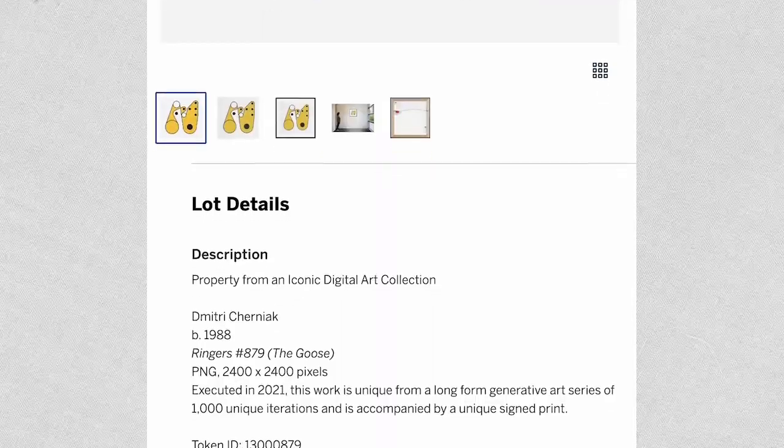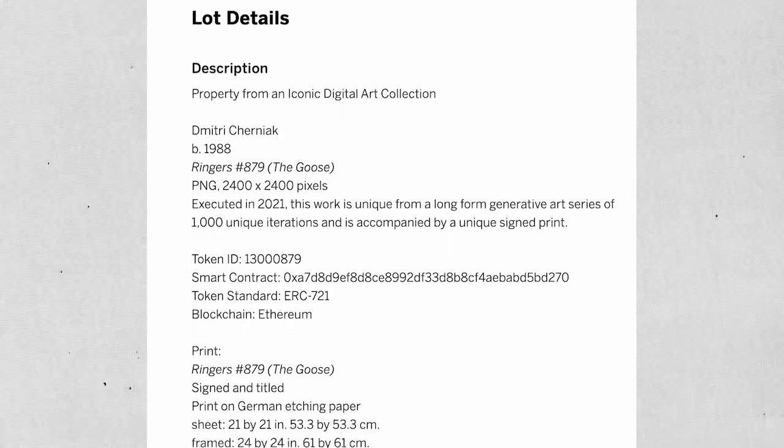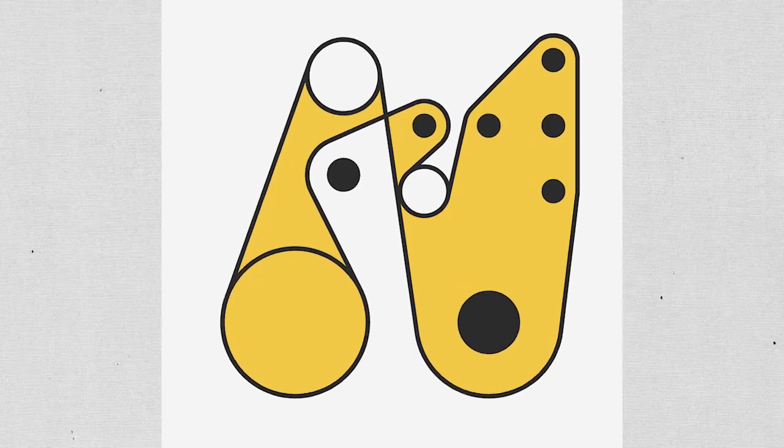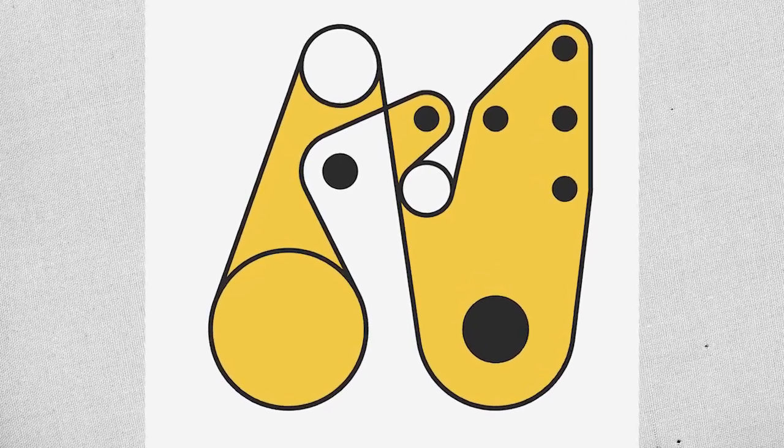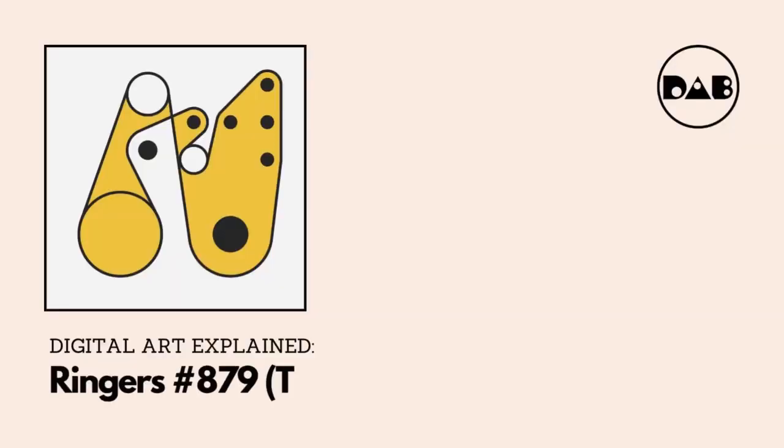On June 15th, 2023, a computer-generated artwork was sold for 6.2 million dollars at a Sotheby's auction in New York, one of the most expensive NFTs ever sold. It became the pride and joy and the symbol of a community. But what's so special about this goose?